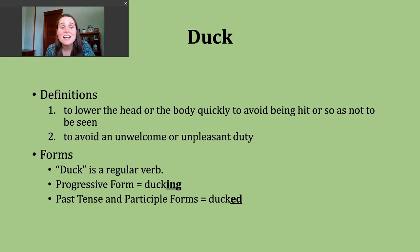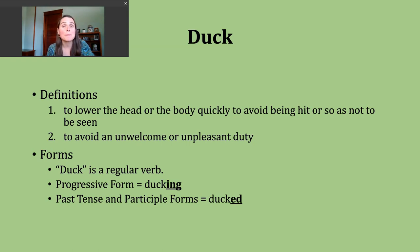You should know that duck is a regular verb. To make the progressive form, all I'm going to do is add -ing to form ducking. The past tense and participle forms can be made by adding -ed. Our base verb duck ends with an unvoiced k sound, which means the past tense ending is going to make a t sound — so it should sound like this: ducked.